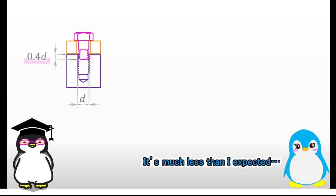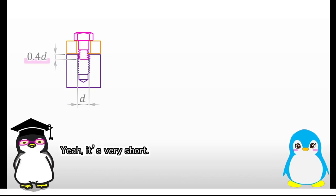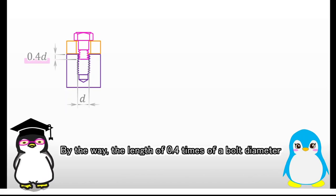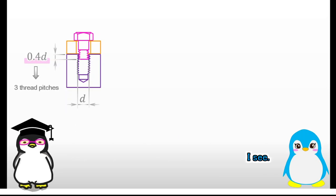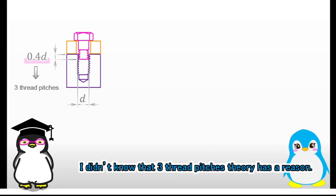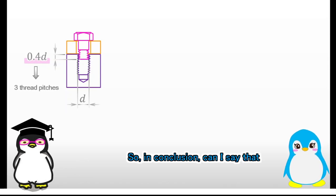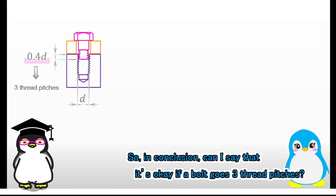It's much less than I expected. Yeah, it's very short. By the way, the length of 0.4 times of a bolt diameter is almost the same as the length of 3 thread pitches. I see. I didn't know that 3 thread pitches theory has a reason. So in conclusion, can I say that it's okay if a bolt goes 3 thread pitches?